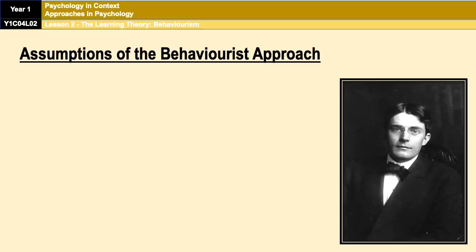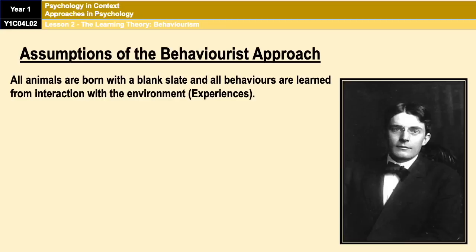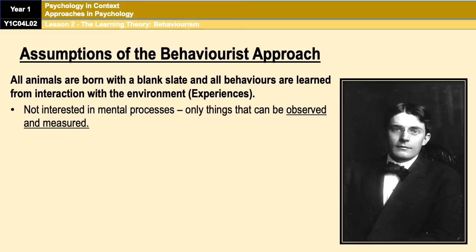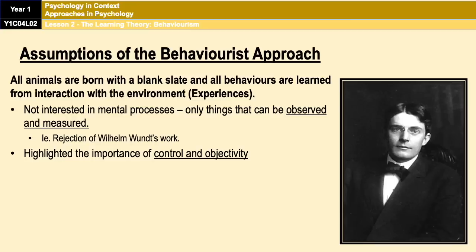Every approach in this chapter has a basic set of assumptions, and it's important to know what those are, because it will not only help you understand the approach, but also help you write exam answers without waffling. The basic assumptions of the Behaviourist Approach are as follows: everybody is born with a blank slate, and all behaviour is learnt through interactions with our environment. Additionally, behaviourists believe you should only study observable and measurable behaviour — they're not interested in mental processes, which is why they rejected the work of Wilhelm Wundt. You should only study these things in objective ways, using lab studies.